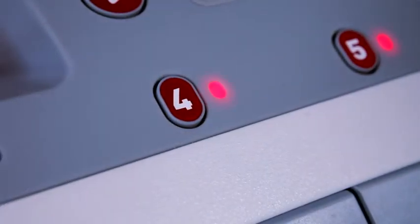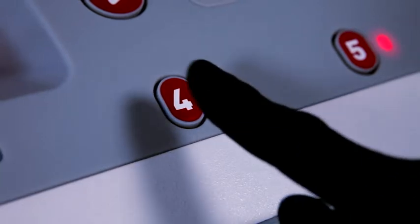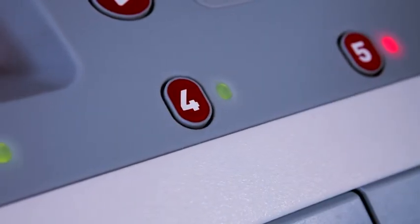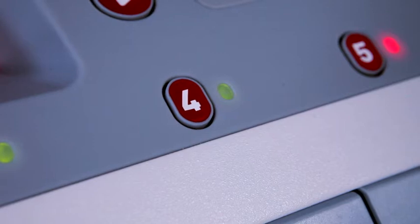When the elution cycle is done, the light will alternate between green and red. This is your cue to start the drain cycle by pressing the number button once again.